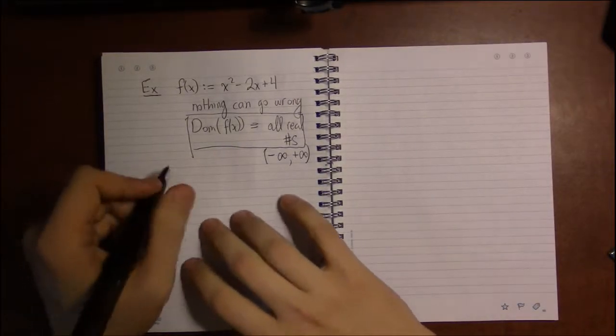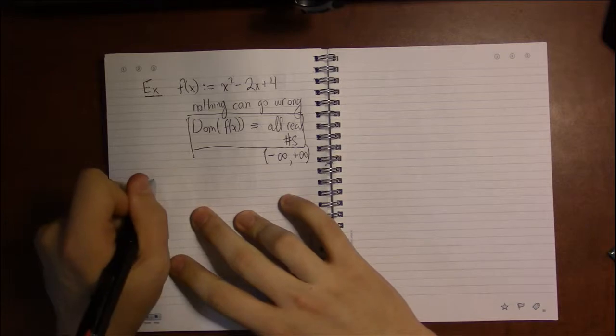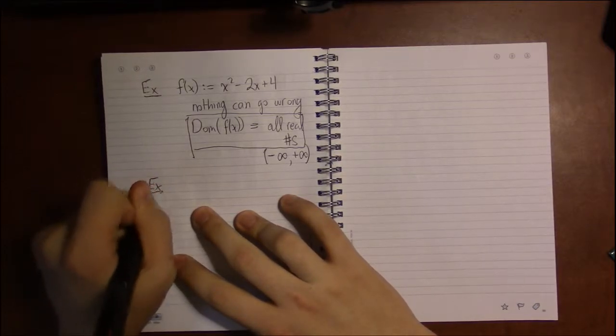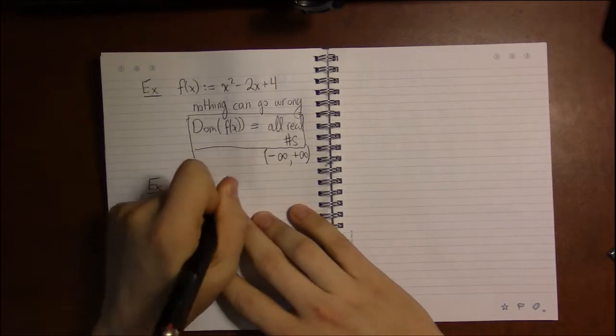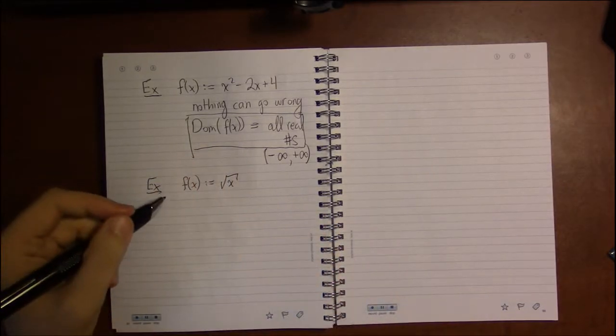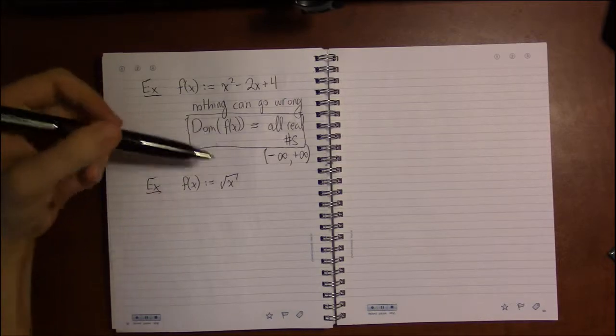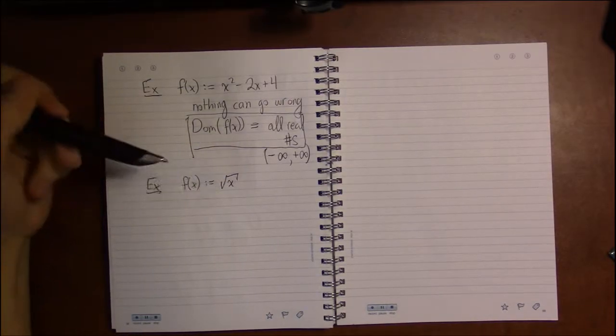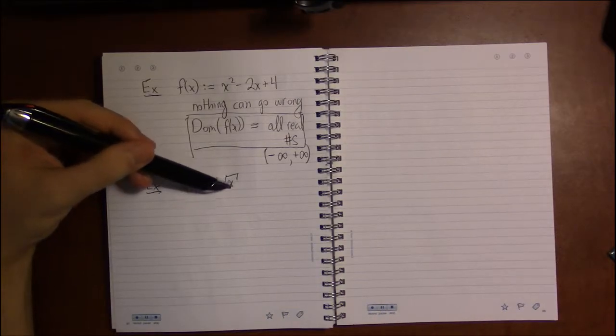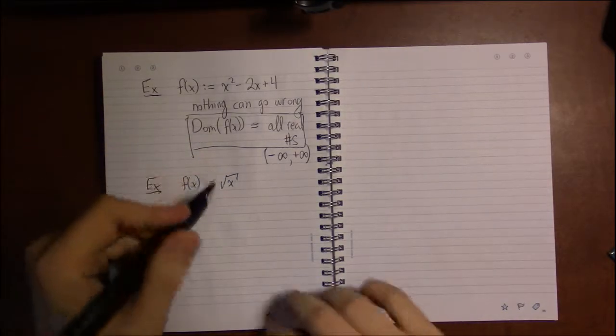But let's go back to that example we were just working with, f(x) equals square root of x. Now, something can go wrong. We could take the square root of a negative number. And the question is, when is that going to happen?